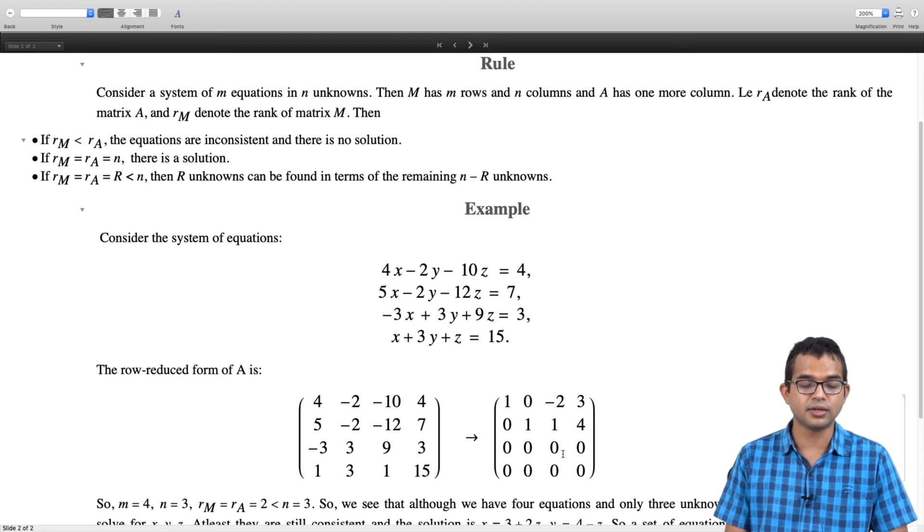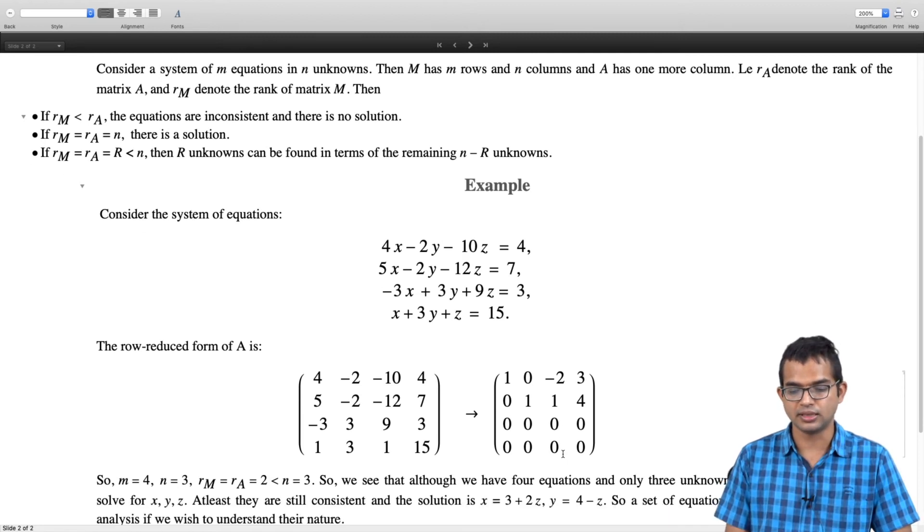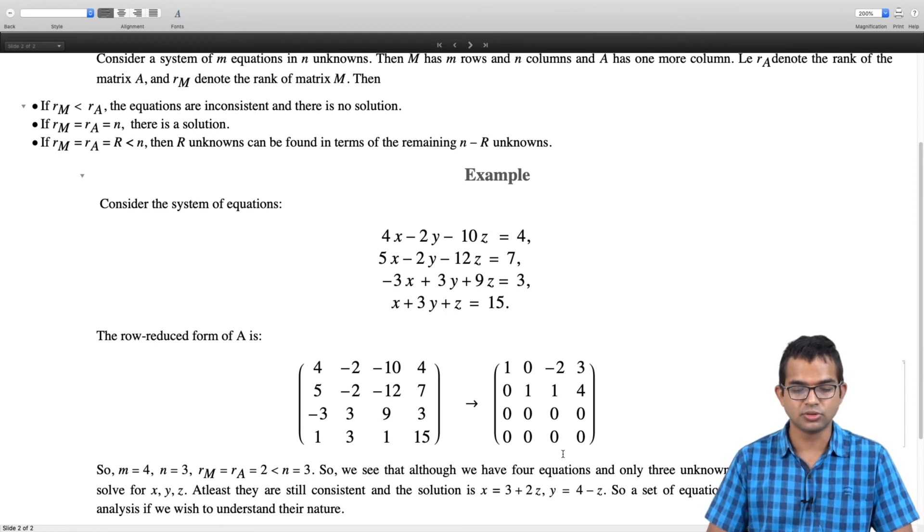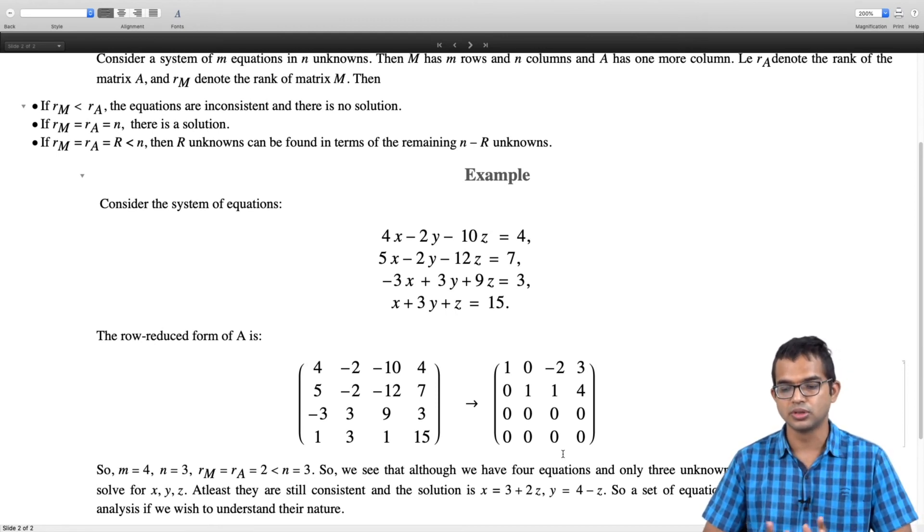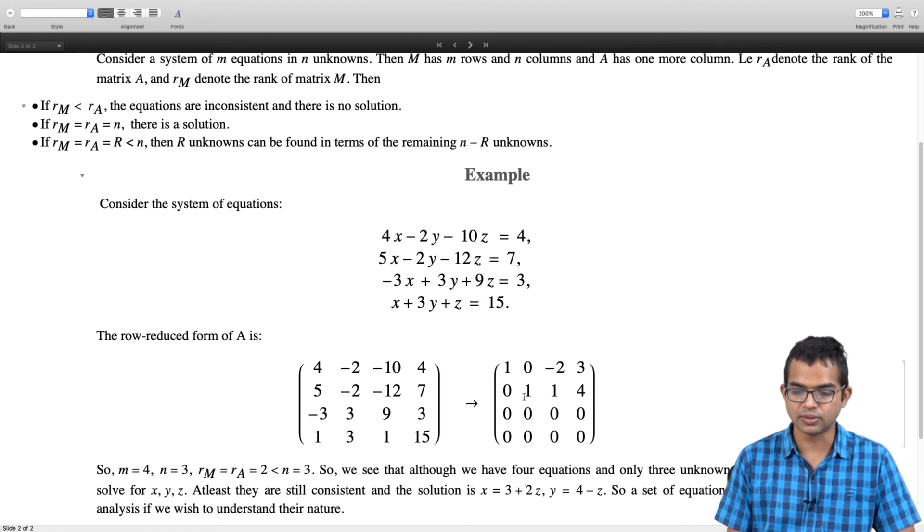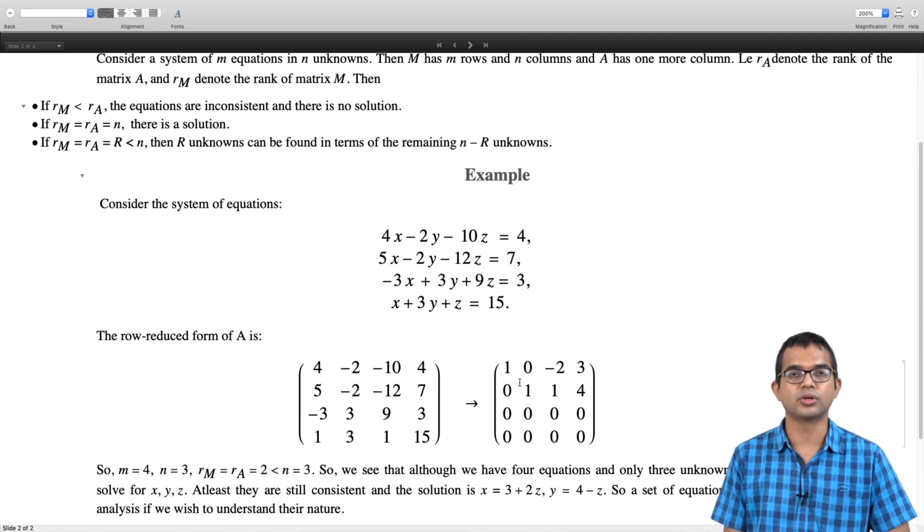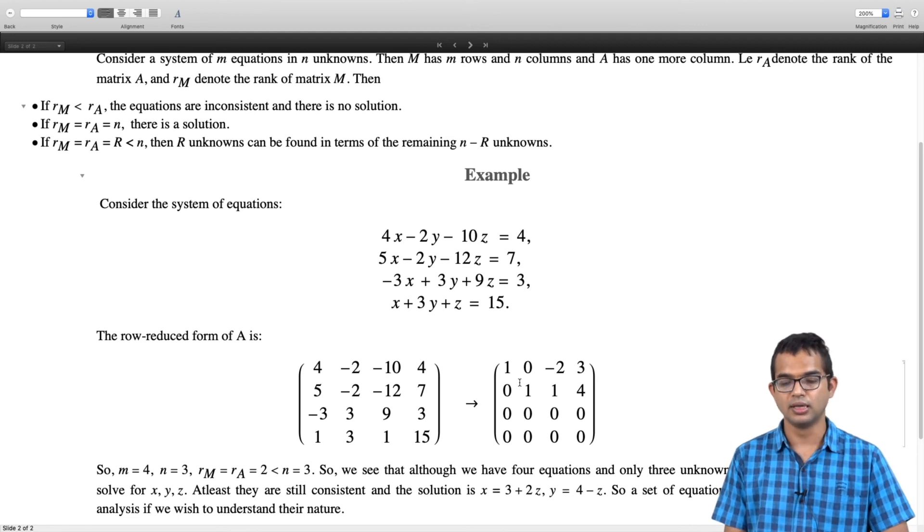And so in this case rm is equal to ra is equal to 2 which is less than n which is equal to 3 right. So we started with m equal to 4 and n equal to 3, so in this case rm and ra are 2 less than n which is equal to 3 and therefore you have actually infinitely many solutions. In some sense you have the freedom to choose z to be whatever you want and then once you have pinned z you can get x and y in terms of z right as you can see from the first equation and the second equation in the row reduced form. So x equal to 3 plus 2z you can read off from the first row and y equal to 4 minus z you can read off from the second row but that's it, there is nothing more you can do. z can take any value and then from which you can solve for x and y right.